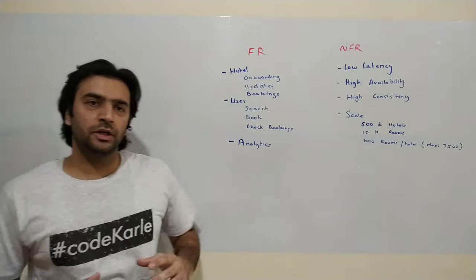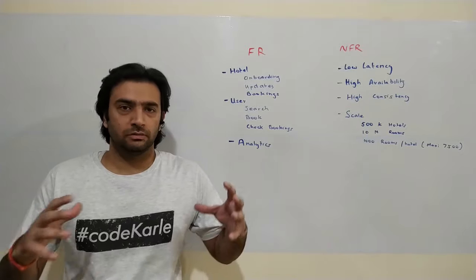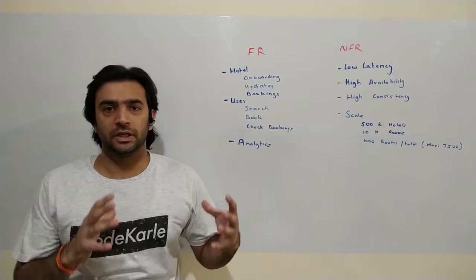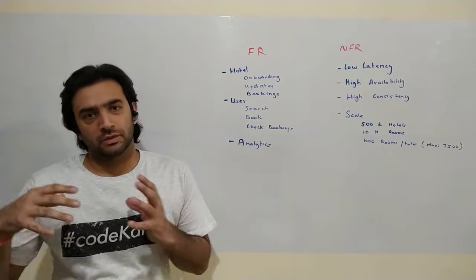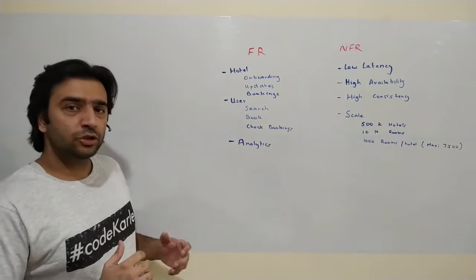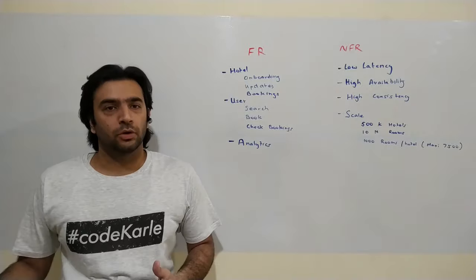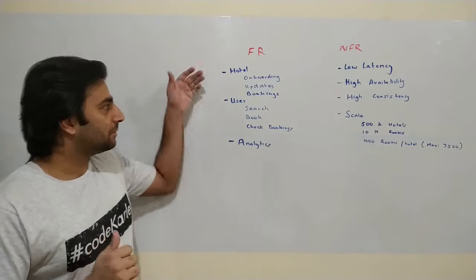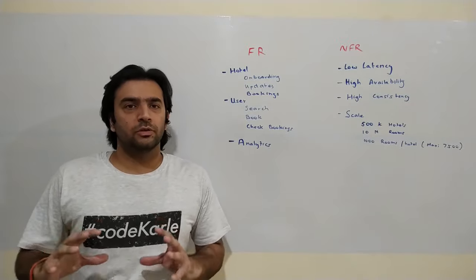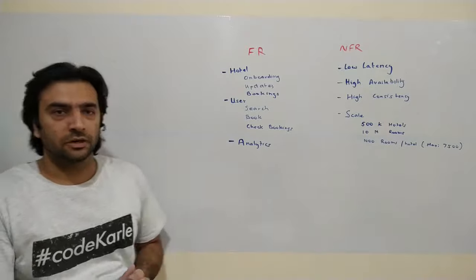From a user standpoint, they should be able to search for a property in a particular location with search criteria — filtering within a price range or by property attributes like a five-star or beachfront property. Then they should be able to book a hotel and view their booking. We should also design in a way that leaves scope for analytics.